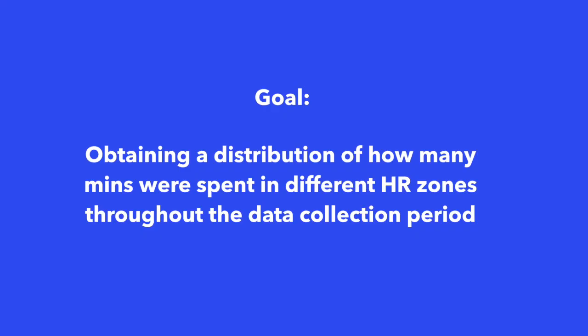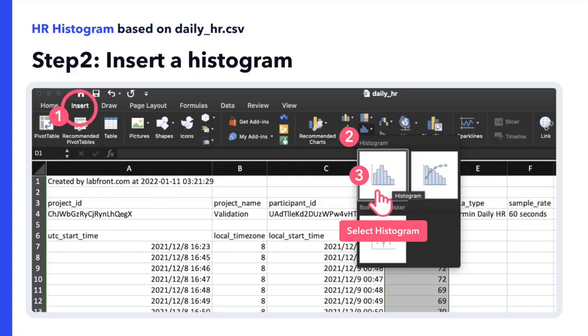If I, the researcher, would like to see a distribution of how many minutes were spent in different heart rate zones over the course of the data collection period, I can create a simple histogram here in Google Sheets.